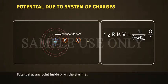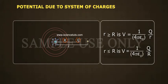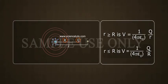Potential at any point inside or on the shell, that is r less than or equal to R, is V is equal to 1 by 4 pi epsilon naught q by R.